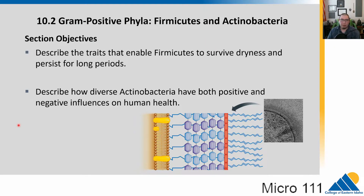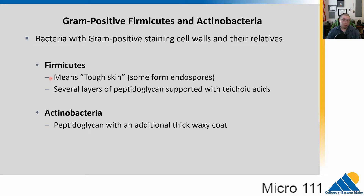We're going to go into each of the different phyla we're going to be talking about. The first group are the gram positives — the firmicutes and the actinobacteria. We'll talk about the cell wall traits of the firmicutes and some important properties of the actinobacteria that are really important for human health. This group has primarily gram positive staining cell walls, though not all of them stain gram positive, because some bacteria in this group have lost or changed their cell walls. The majority are gram positive staining and all are evolutionarily related.